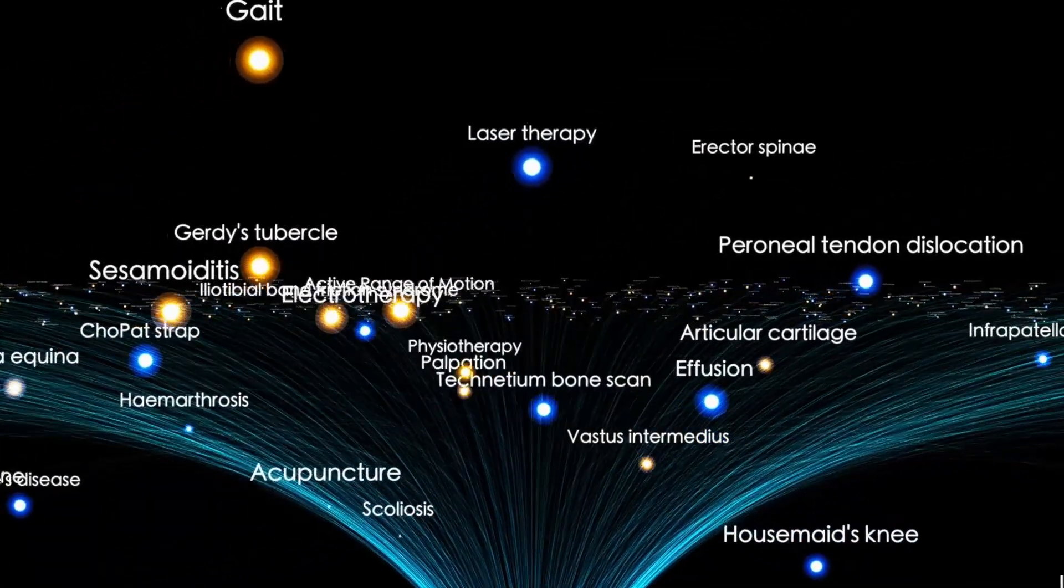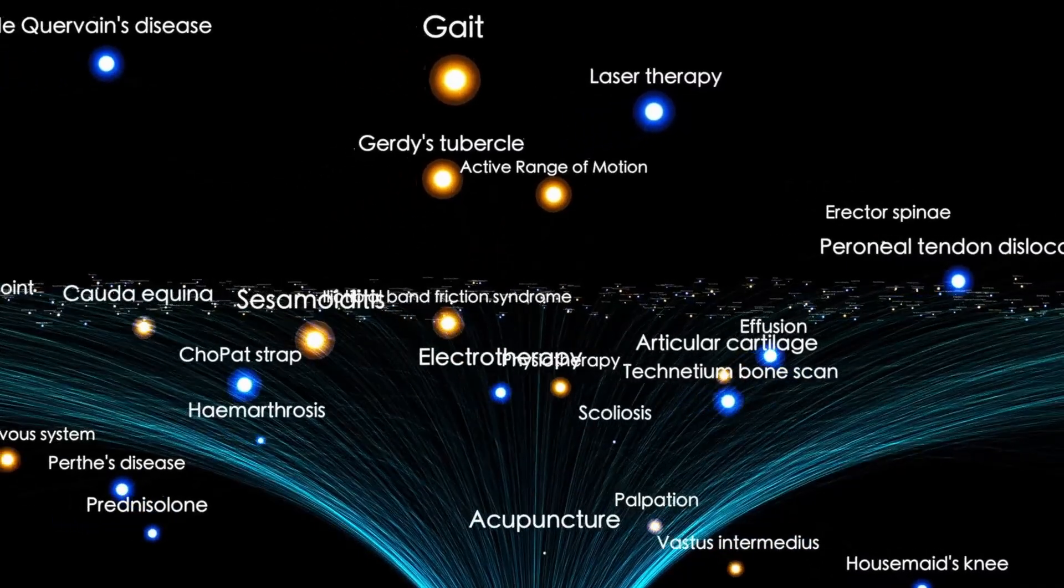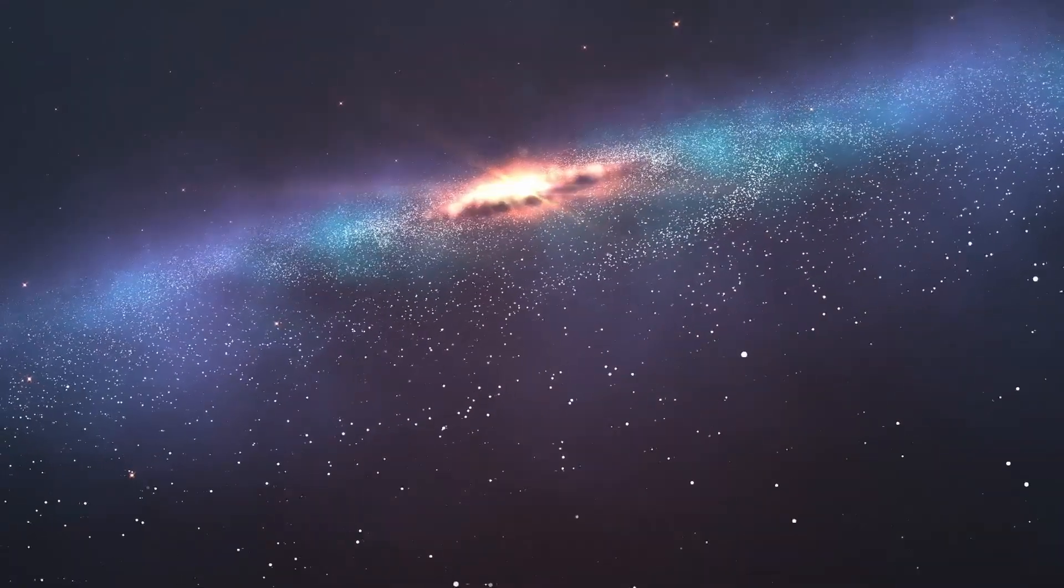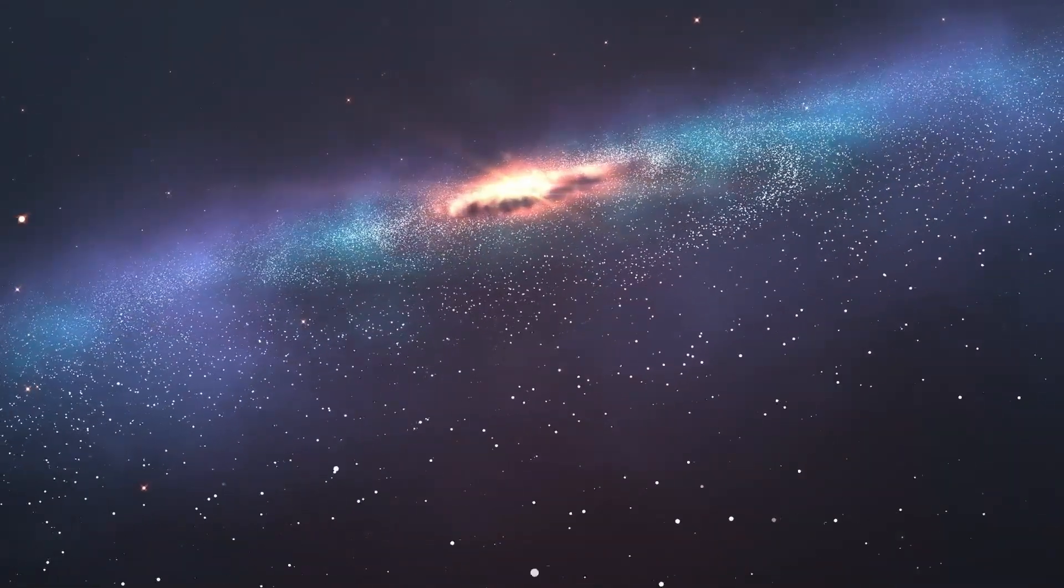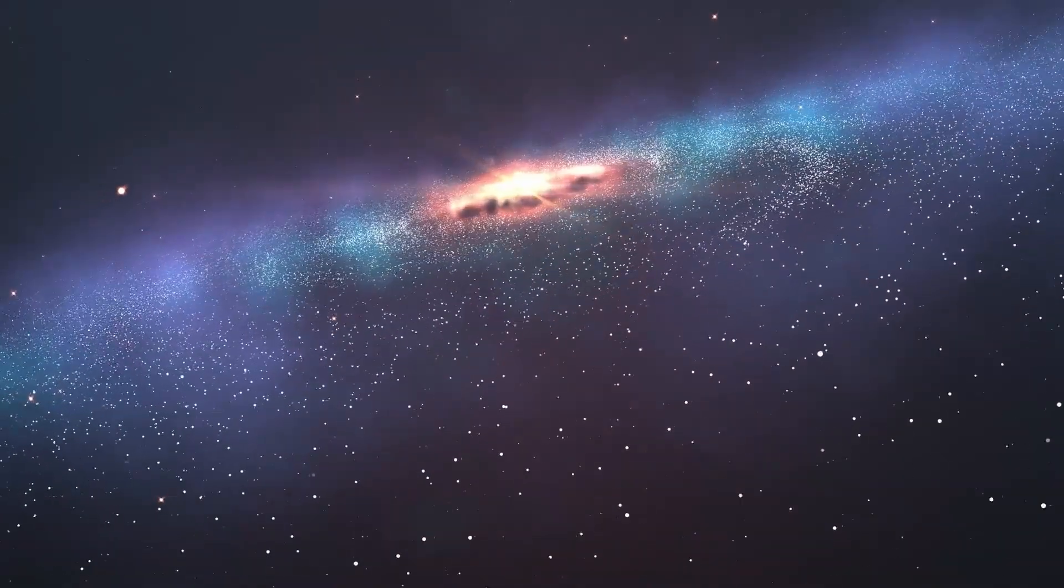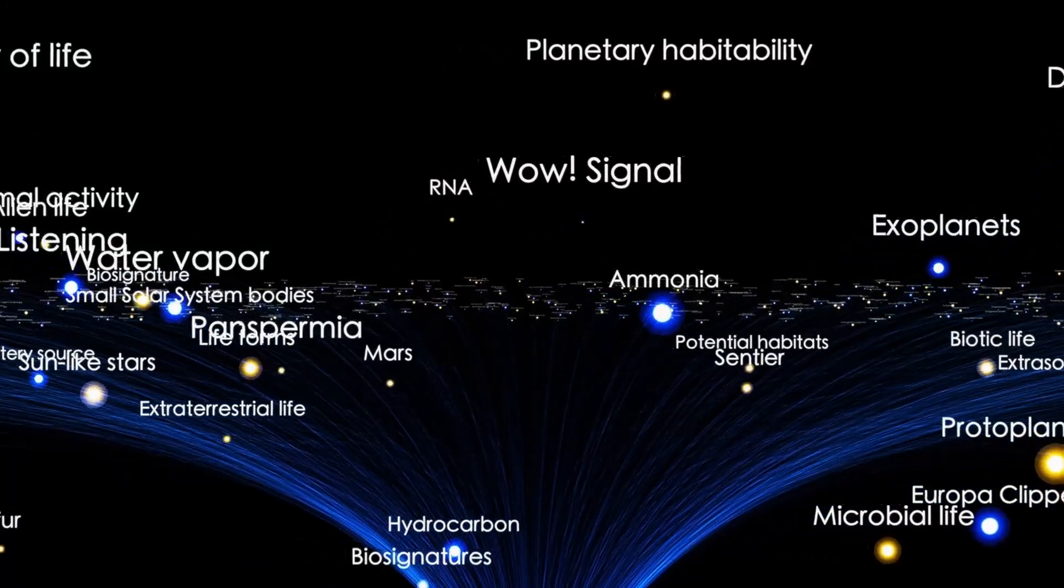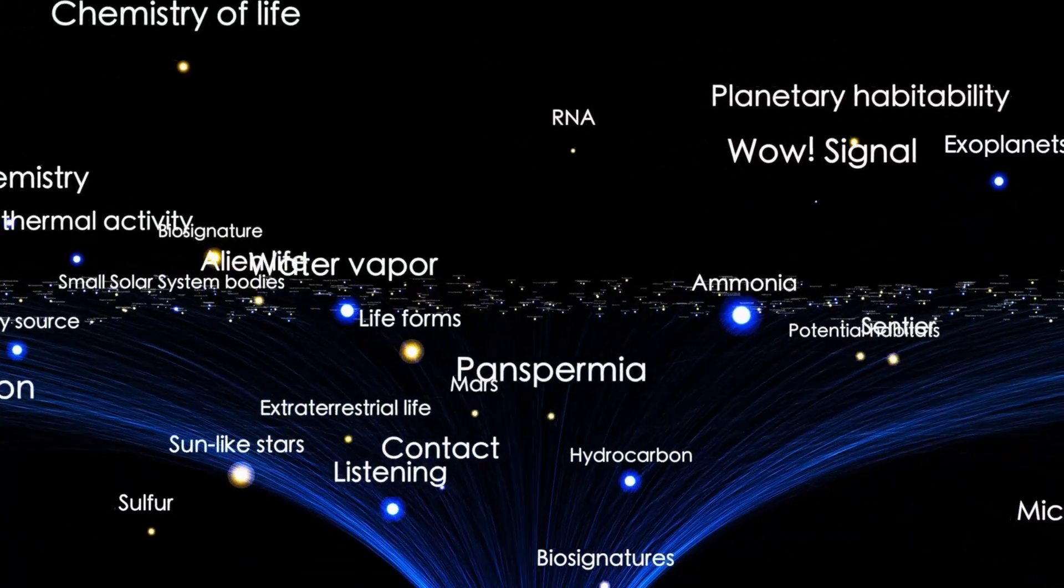Instead, what they found left even the most experienced scientists speechless. The path of 3I Atlas was almost perfectly aligned with the ecliptic plane, the flat disk on which all the planets orbit the sun. Its tilt was only 4.89 degrees, a difference so small that it had less than a 1% chance of happening by coincidence. No other interstellar object, not even Oumuamua or Borisov, had ever traveled this way.